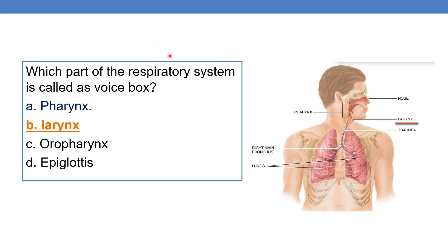Which part of the respiratory system is called the voice box? The answer is the larynx. The larynx is called the voice box, whereas the pharynx is called the throat. So the answer is option B — larynx.